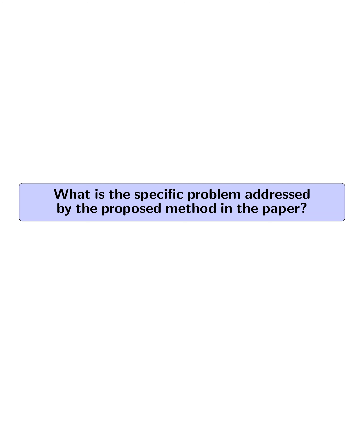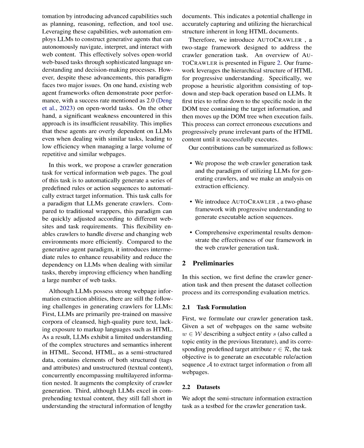What is the specific problem addressed by the proposed method in the paper? The specific problem addressed is the inefficiency and lack of reusability in existing web automation frameworks that heavily rely on large language models (LLMs) for generating action sequences to extract target information from web pages. The paper introduces AUTOCRAWLER, a two-stage framework designed to address the crawler generation task for vertical information web pages.